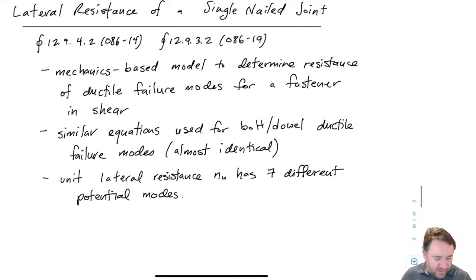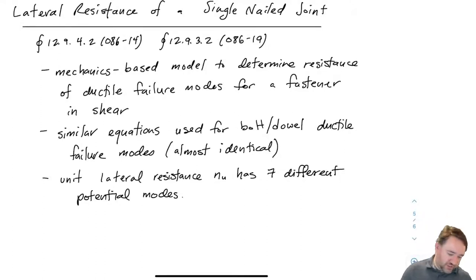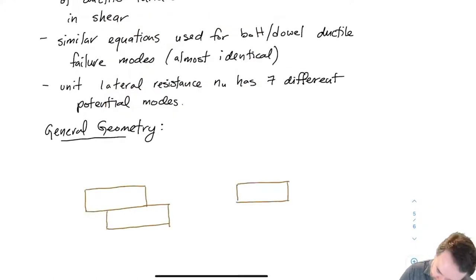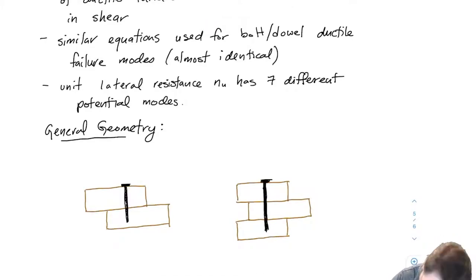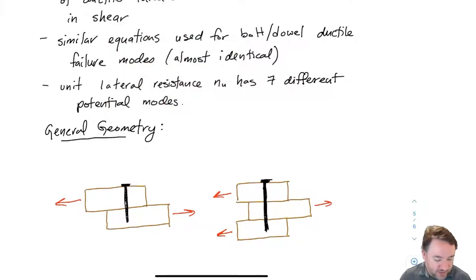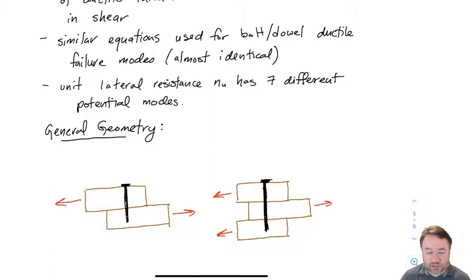Before we do that, let's look at the geometry of a nail. I'm going to draw some pictures and these types of pictures will repeat over and over in our discussion. Here on the left is a two-member connection, and on the right a three-member connection. I'm going to point out which side is which and how we label each of the members when we talk about them, because it matters when we look at the different parameters for each piece of these connections.